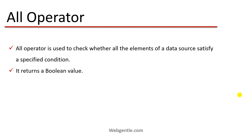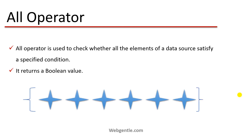It returns a boolean value. Suppose I have a list as the data source with some elements — the type of element may be anything. I need to apply a condition on this data source. The output will be true if all the elements of this data source satisfy that particular condition. If any of them is not satisfying the condition, then the output will be false.